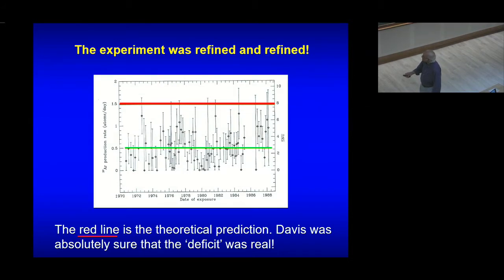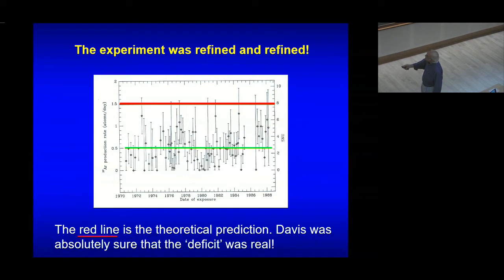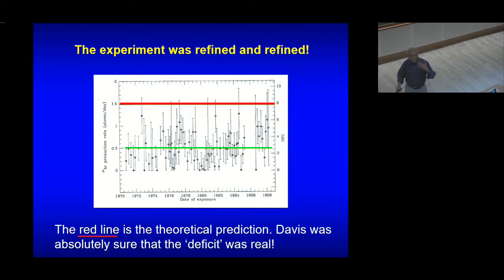Davis continued with this experiment for 20 years. The average number of neutrinos he detected was 0.5 in some units, while the theoretical prediction was 1.5 in those same units. Allowing for the large errors, very clearly this discrepancy is significant after 20 years of continuous experimentation.